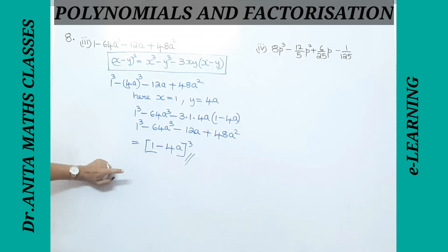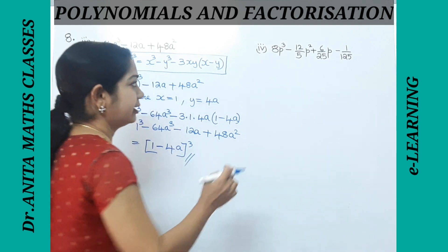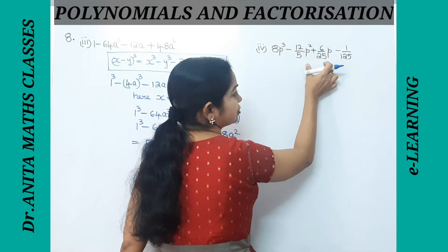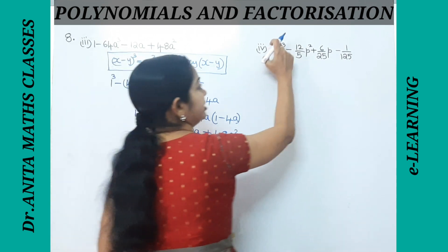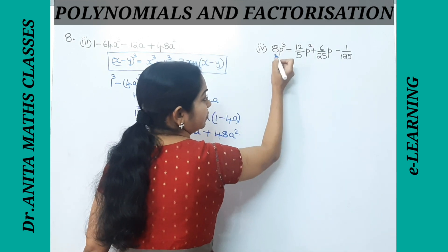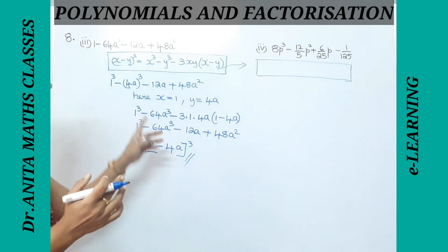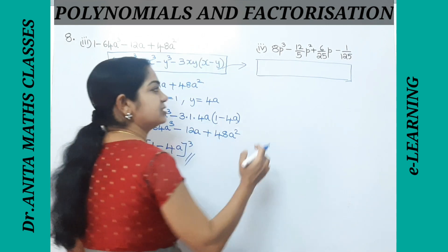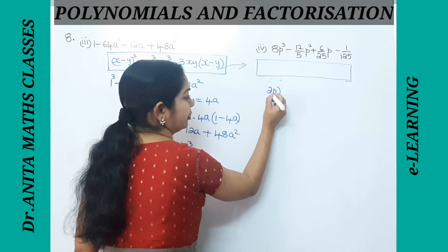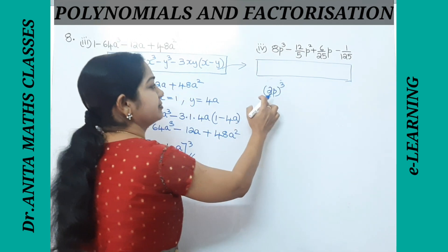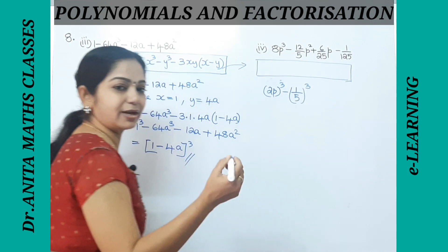For the fourth problem, again we look for cube terms. We have 8p³ = (2p)³ and 1/125 = (1/5)³. The other terms are not in cube form. Since there are negative signs, we again use the (x − y)³ identity. I can write (2p)³ − (1/5)³.